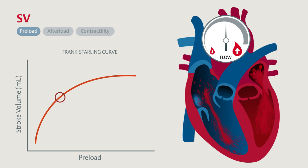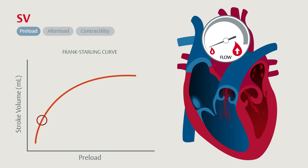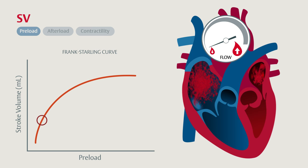The Frank-Starling principle illustrates the heart's ability to increase stroke volume in response to an increase in preload. Here we're starting out with a normally filled left ventricle generating a stroke volume of 70 milliliters per beat. When we decrease volume in the ventricle, the preload and often the stroke volume decreases. The systemic vascular resistance may increase in response to the decreased cardiac output, and blood pressure may therefore stay relatively constant.